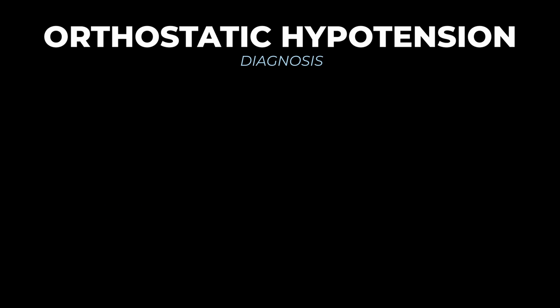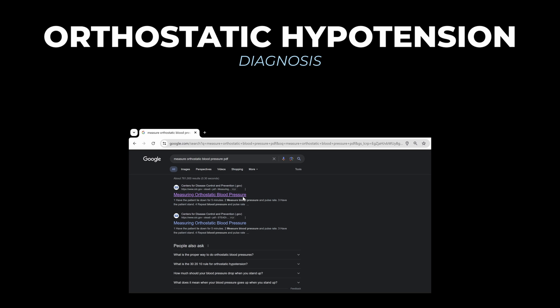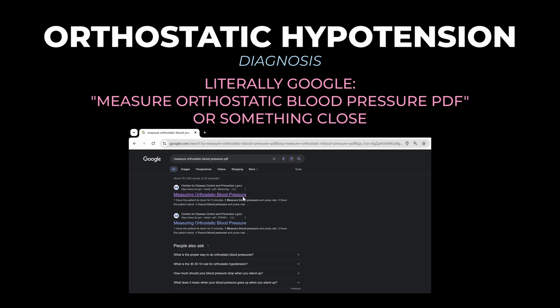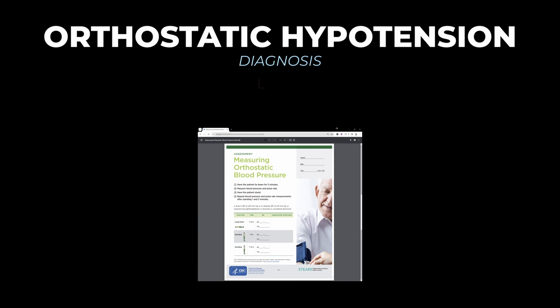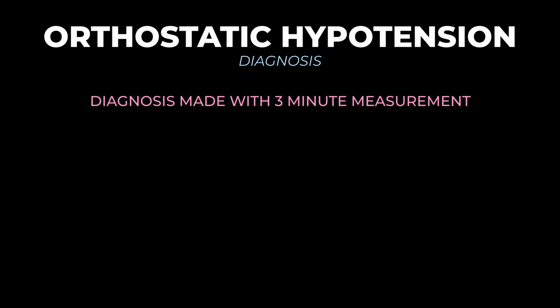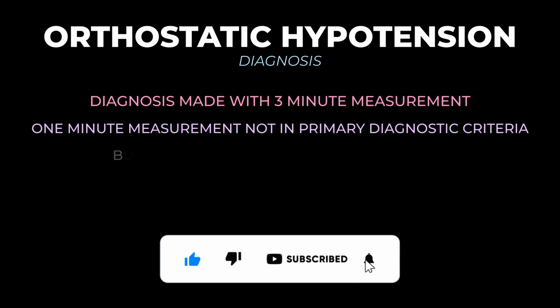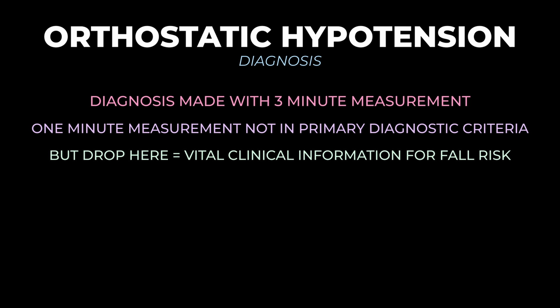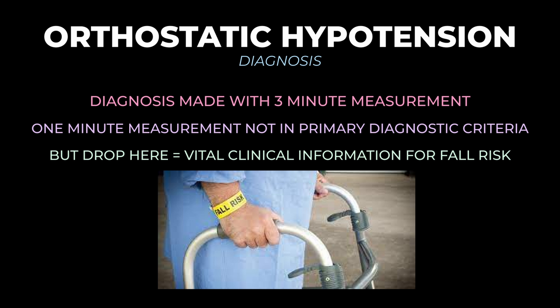It's important to know how you measure and diagnose orthostatic hypotension. Whenever I need to measure orthostatic blood pressure, I Google 'measuring orthostatic blood pressure PDF' and follow the first result. You have the patient lie down for five minutes — sitting is okay if lying is impossible, though it may miss a few cases. Check blood pressure and pulse, then have them stand and repeat measurements at one minute and three minutes of standing. If after three minutes there's a drop of 20 in the systolic or 10 in the diastolic, the diagnosis is made. The one-minute measurement, while not part of primary diagnostic criteria, provides valuable clinical information about the patient's response to standing.